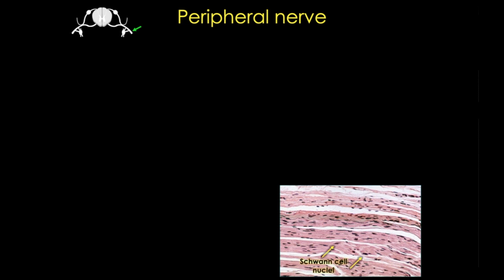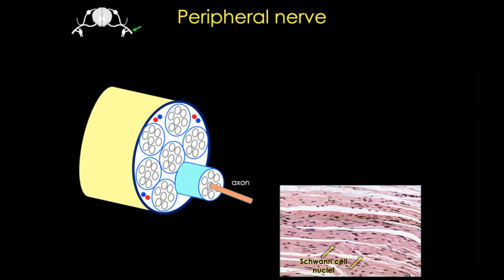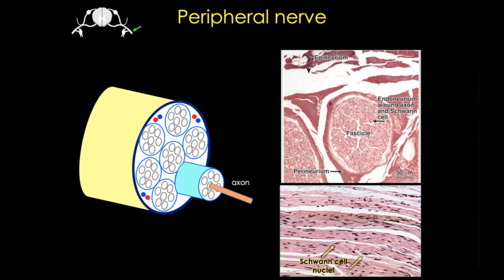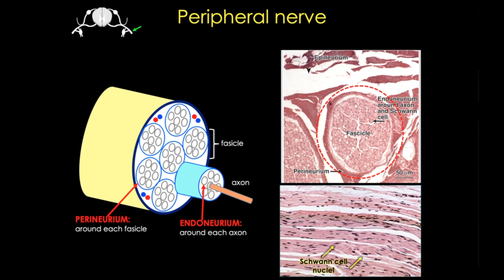Peripheral nerves contain three types of connective tissue covering, shown here both in a cartoon and in this H&E section. The innermost covering is called the endoneurium — thin connective tissue with reticular fibers secreted by Schwann cells that surrounds an individual axon and its associated Schwann cells. Single axons bundle together into fascicles, and the perineurium surrounds each fascicle. This thicker layer contains modified fibroblasts, and you'll often see blood vessels and a few immune cells within it. Finally, the epineurium is the outer covering of large nerves — denser regular connective tissue that can be continuous with the capsule of a ganglia.